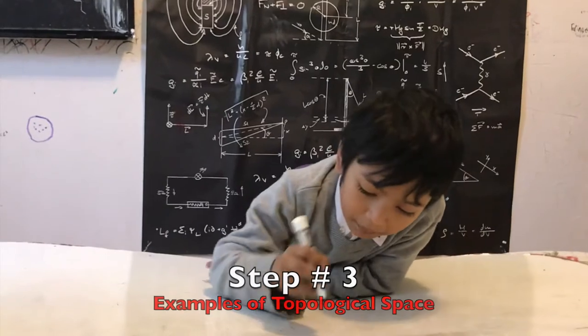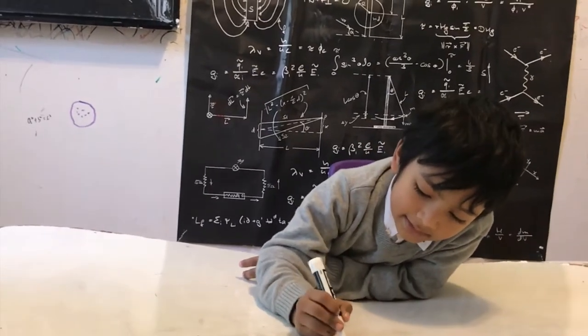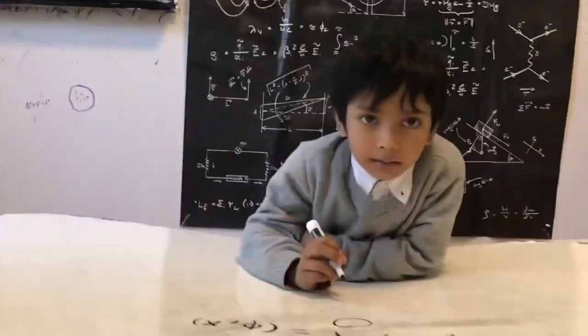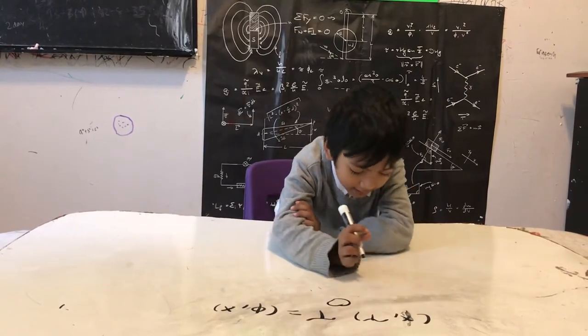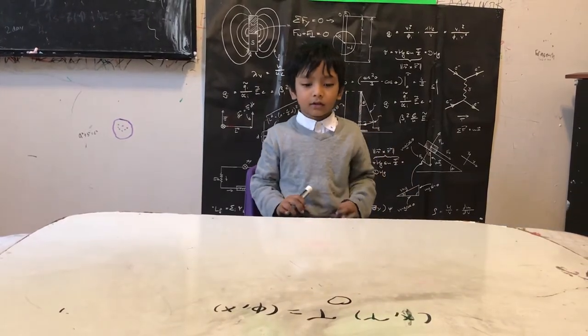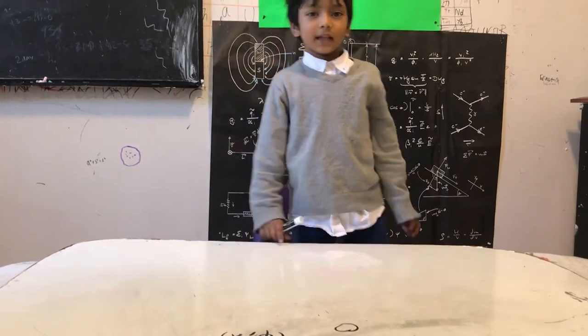Now, is this a topology? Yes. Why? Because it follows the three axioms. Is this a topology? Yes. Why? Because it follows the three axioms, you may say.